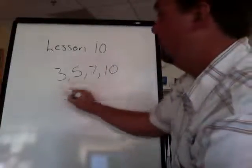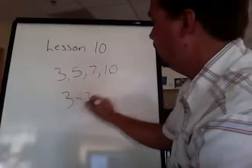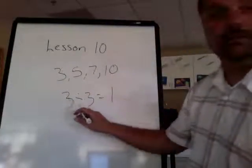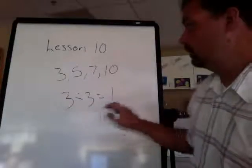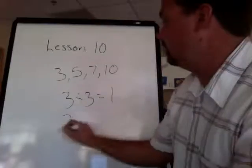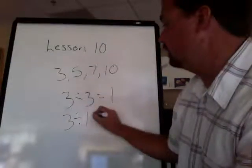So 3 divided by 3 equals 1, divided by the number 3 and the number 1. So if we divide 3 divided by 1, that equals 3.